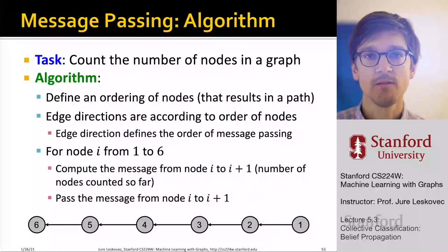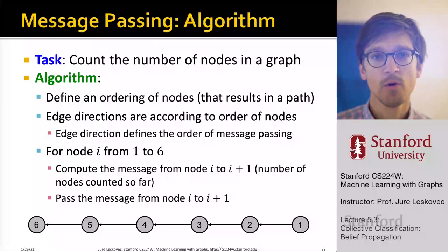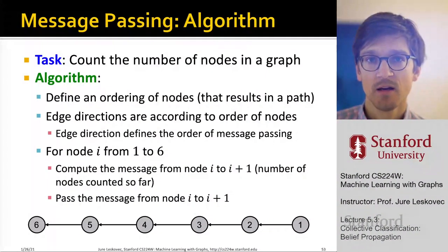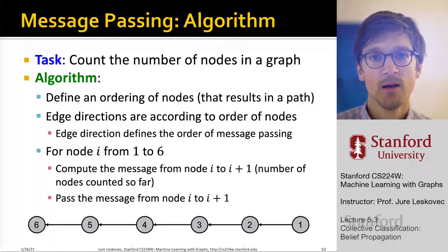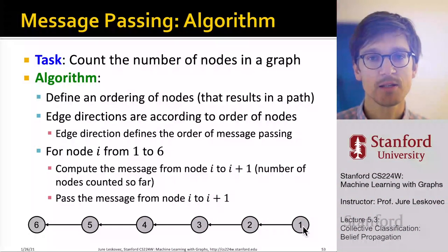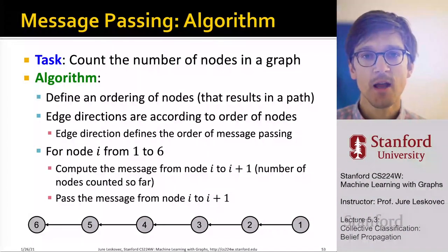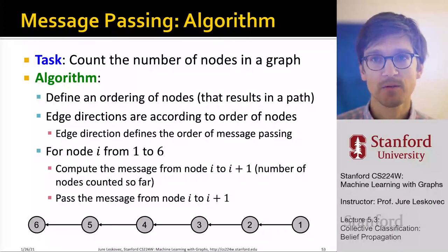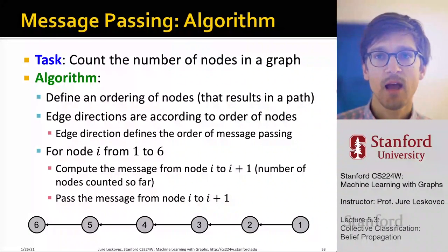The task is to count the number of nodes using message passing. We define some ordering on the nodes that results in a path, and edge directions are determined by that ordering. This determines the order in which messages are passed. With nodes ordered 1 through 6, messages start at node 1 and are passed to node 6. Node i computes a message and sends it to node i+1; each node gets the message, may transform it, and passes it on.